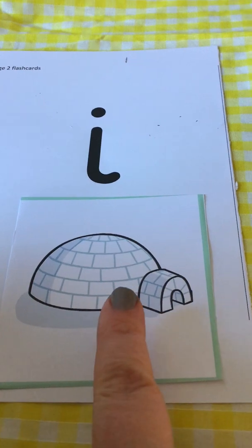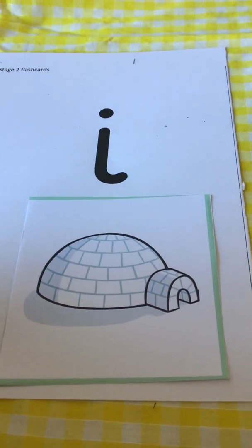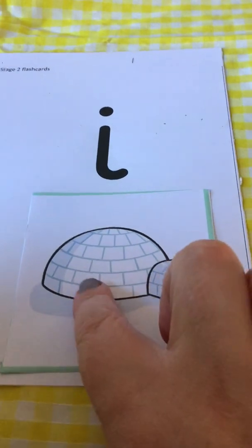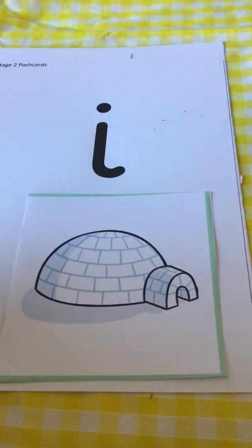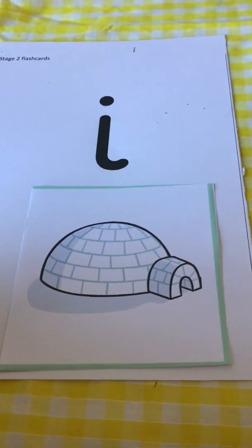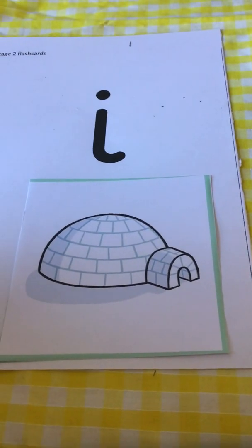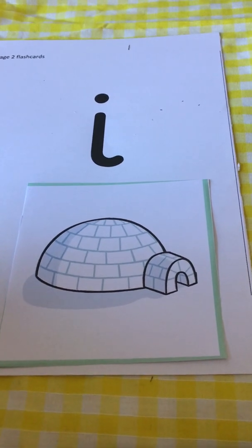My turn. Igloo. Your turn. An igloo is a house made of ice and snow and you'd find it in a cold place like the North Pole. My turn. Igloo.